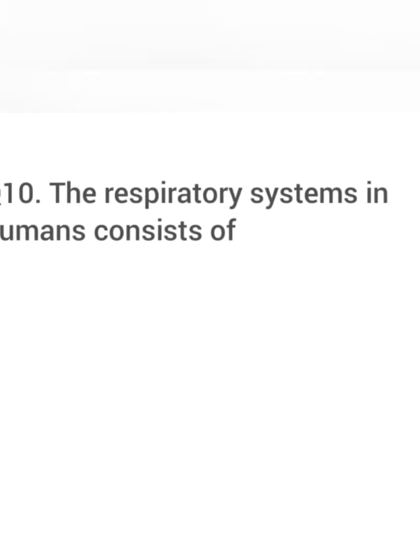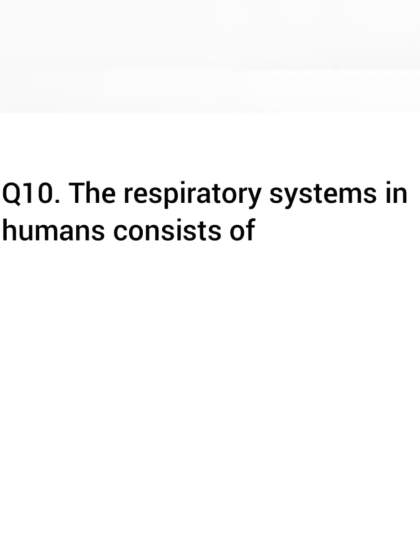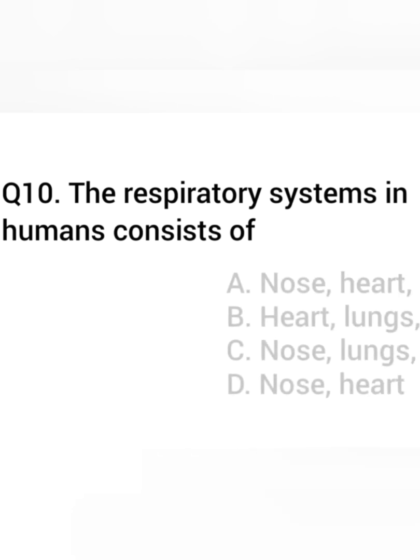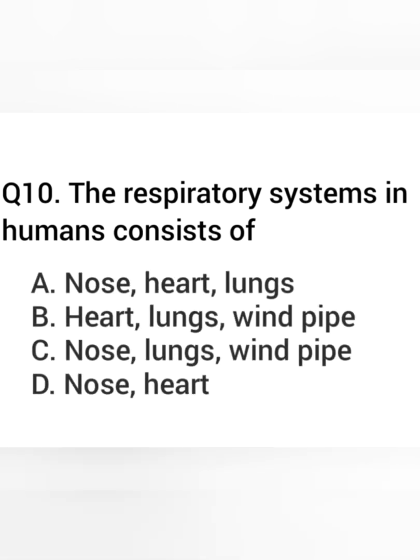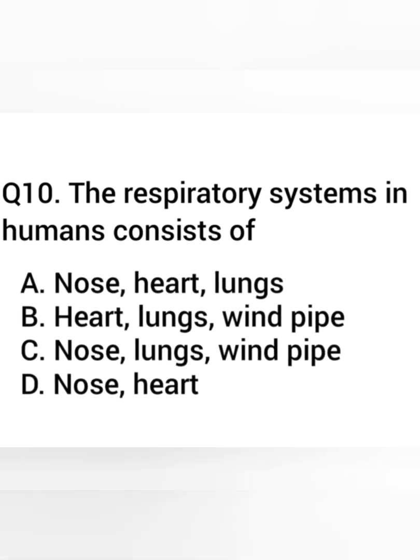Question 10. The respiratory system in the human consists of — Answer: Nose, lungs, and windpipe.